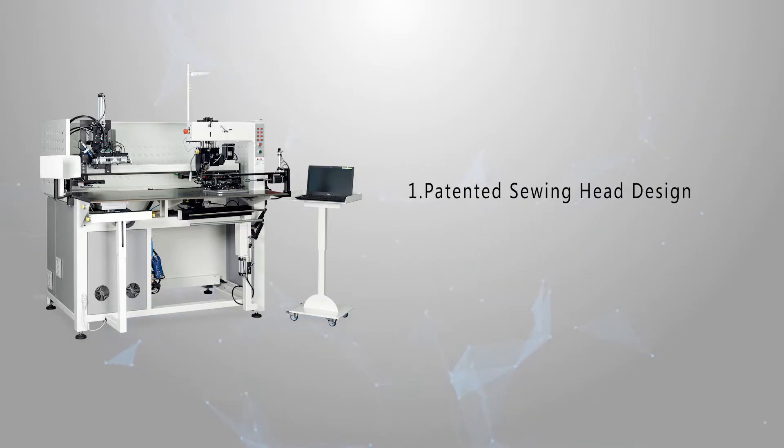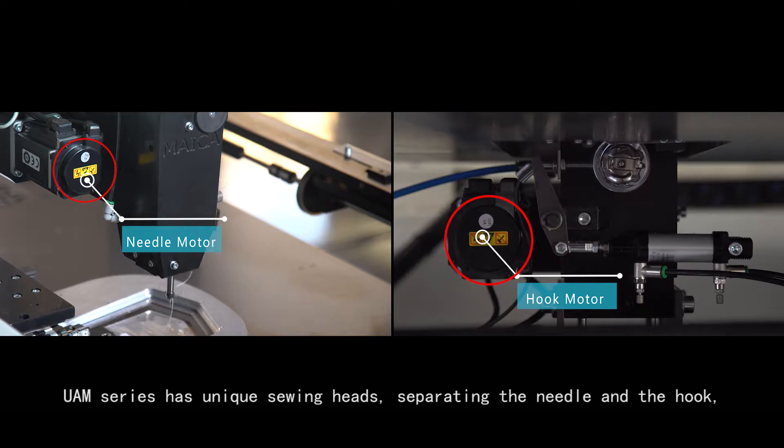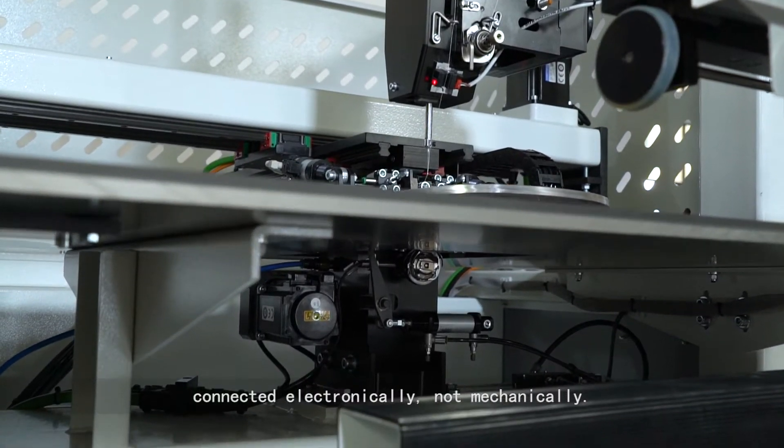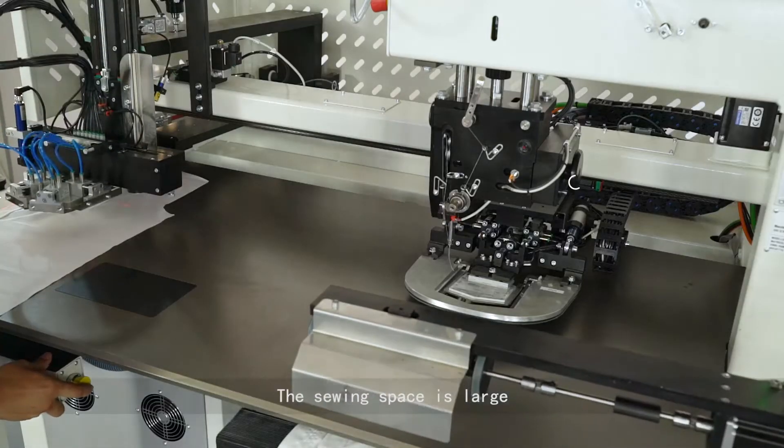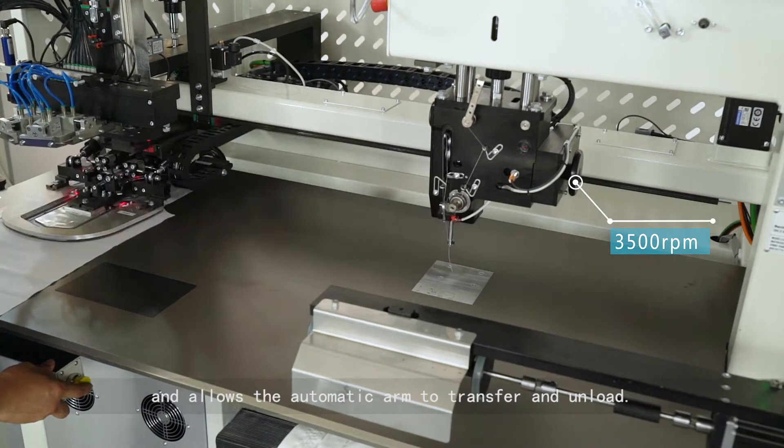Patented Sewing Head Design. UAM series has unique sewing heads, separating the needle and the hook. They are driven by two independent motors, connected electronically, not mechanically. The sewing space is large and allows the automatic arm to transfer and unload.